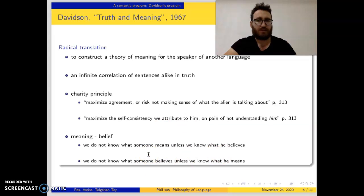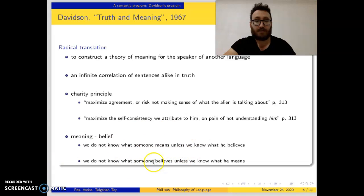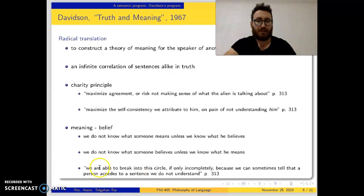Radical translation — this is actually Quine's point, or its roots can be found in Quine's work. But Davidson adds that we are able to break into this circle, if only incompletely, because we can sometimes tell that a person accedes to a sentence we do not understand.